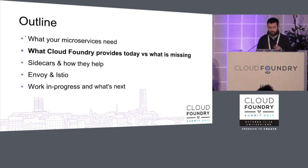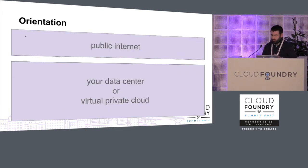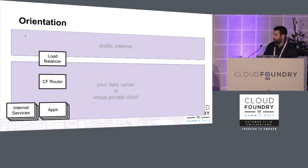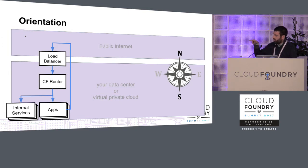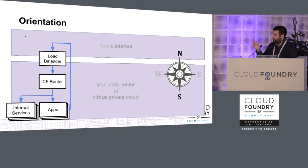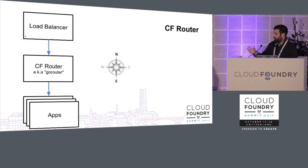Cloud Foundry today provides some of these features but not everything. A quick orientation: you might have a data center or public/private cloud connected to the public internet, with a load balancer, the Cloud Foundry router, and your apps and services inside. Networking folks use 'north-south' to describe traffic flowing in from the public internet. Applications talking back out through the top and re-entering is called hair pinning, but the better approach is for applications to talk directly — this is called east-west traffic.